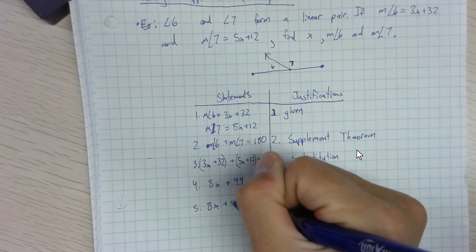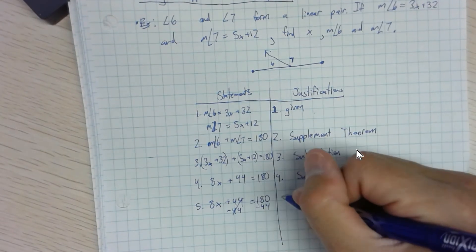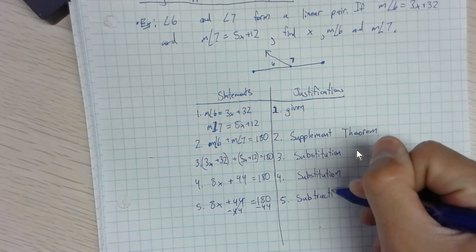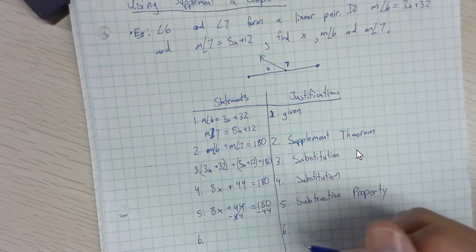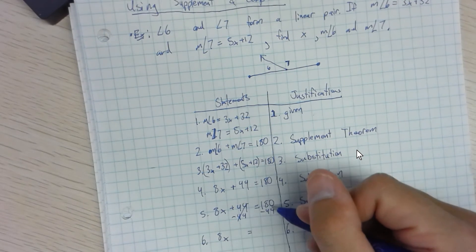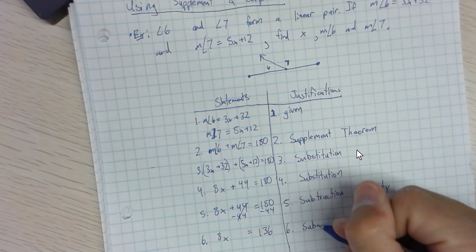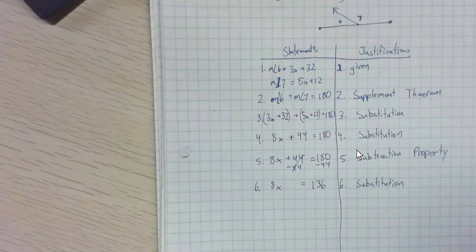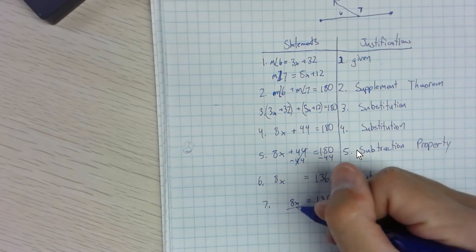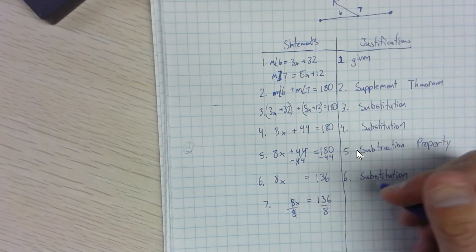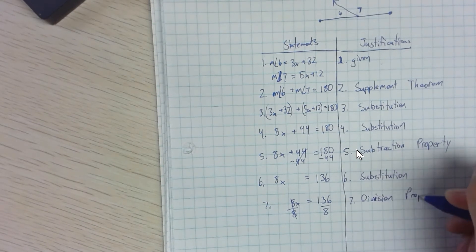Subtract 44 from both sides — that's the subtraction property. So 8x equals 136. Rewriting that is substitution. Then divide both sides by 8 — that's the division property. So x equals 17.